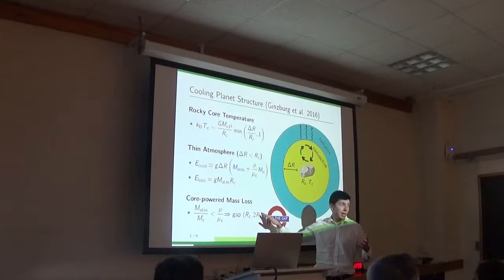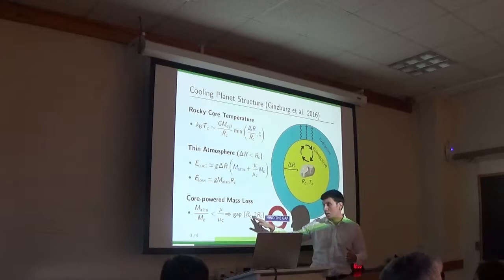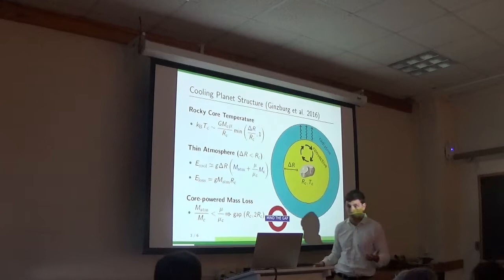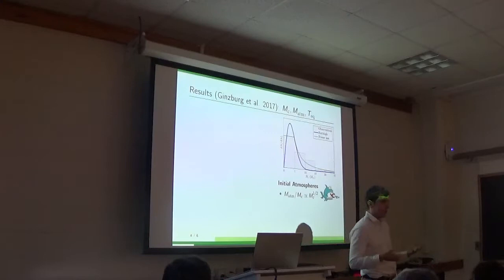Because the more atmosphere you lose, the easier it is to lose the rest of the atmosphere, because we need less energy to unbind it. So this is why planets are driven to being either roughly twice the radius of the core with massive atmospheres, or just being the radius of the core because they've lost all of the atmosphere. And we expect to find the gap between these two values. And I'm claiming that this gap is exactly the valley that we see in the distribution.